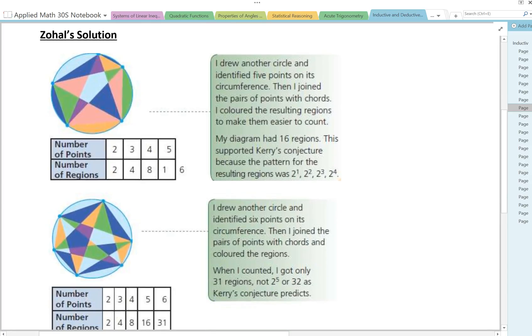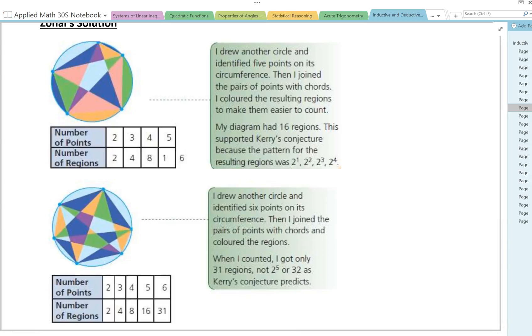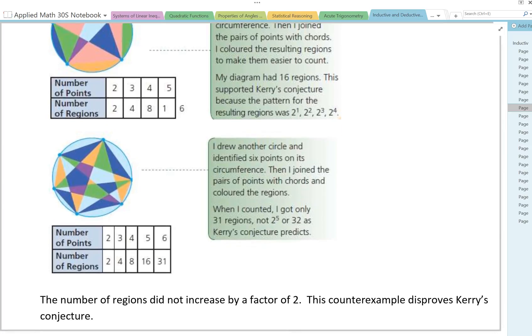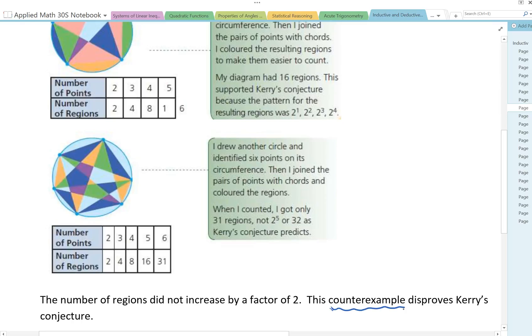Then she drew another circle and identified 6 points on its circumference. Then I joined the pairs of points with cords and colored the regions. When I counted, I got only 31 regions, not 2 to the power of 5, or 32 as Carrie's conjecture predicted. So if Zohal only tested to 5, she might state that the conjecture is valid. But going one step further, having tried the next one, she saw that, well, now this is a false statement. This doesn't hold true. The number of regions did not increase by a factor of 2. This counterexample disproves Carrie's conjecture.